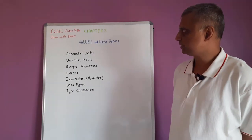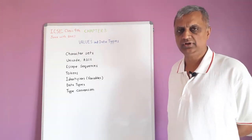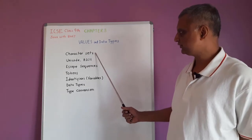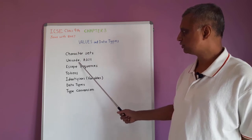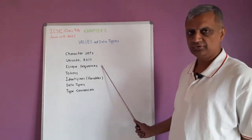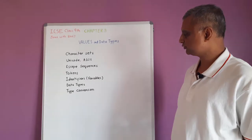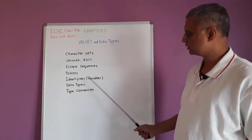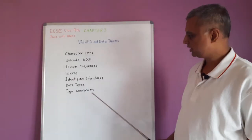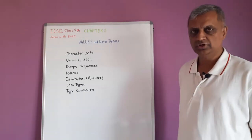This is the third chapter called Values and Data Types. We are going to learn character sets, then Unicode and ASCII, escape sequences in Java, what a token is and its different types, identifiers or variables, the different types of data types in Java, and how type conversion is done.